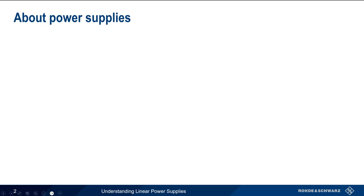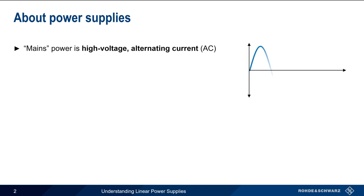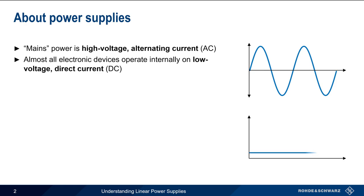Let's start by explaining what we mean by a power supply. Electrical mains power — that is, the power present at standard electrical outlets — is delivered as high voltage alternating current. High voltage here means between 100 and 240 volts. Almost all electronic devices require low voltage direct current for their internal operation, typically dozens of volts or less.